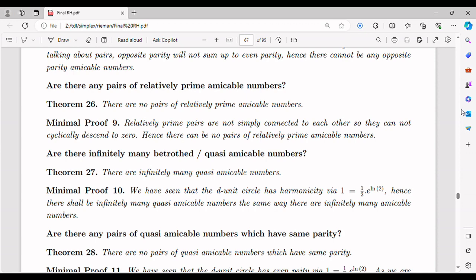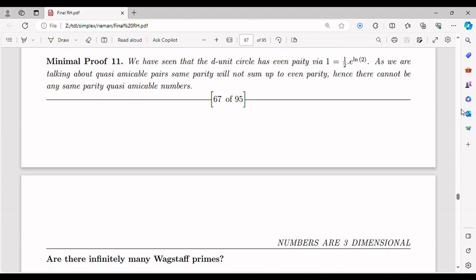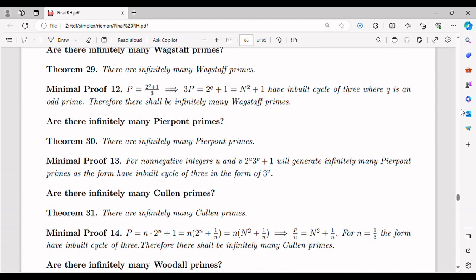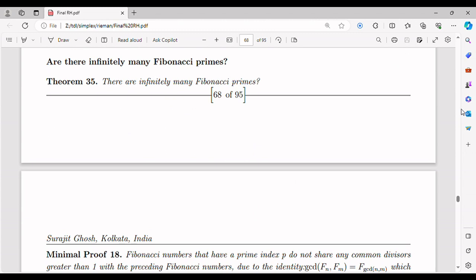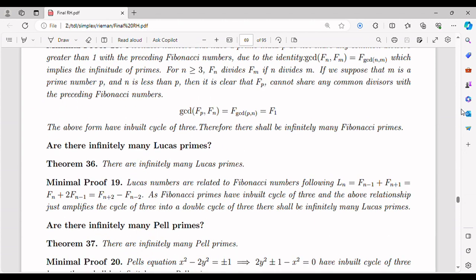General relativity, Einstein's theory of gravity, describes the fabric of space-time as curved and influenced by mass and energy. If imaginary numbers were integrated into the real number line, it could potentially impact the mathematical framework of general relativity. New possibilities might arise for the analysis of complex space-time geometries, including those involved in black holes, gravitational waves, and the early universe. It could lead to novel insights into the relationship between gravity and quantum mechanics, an area that remains unresolved even today.